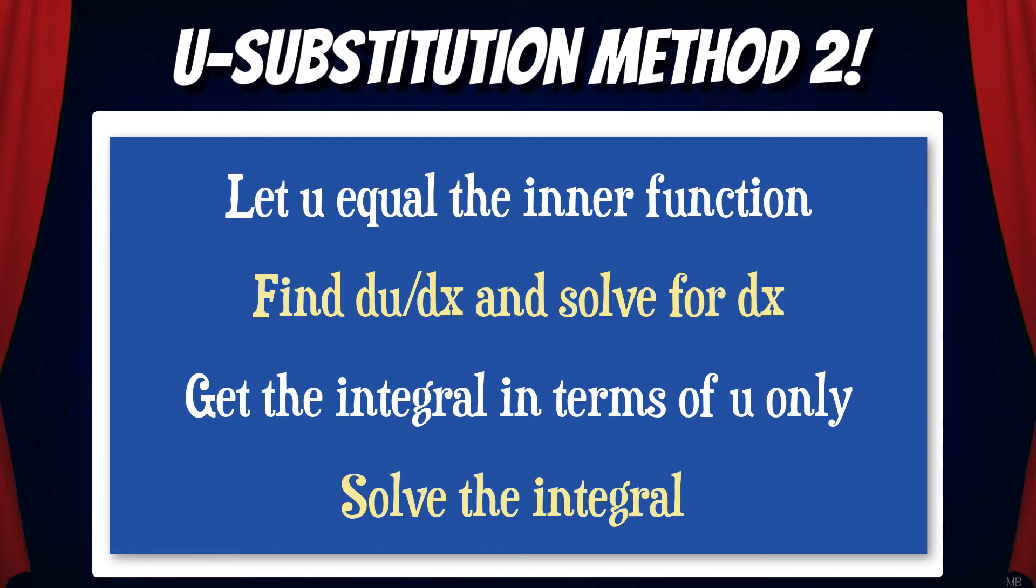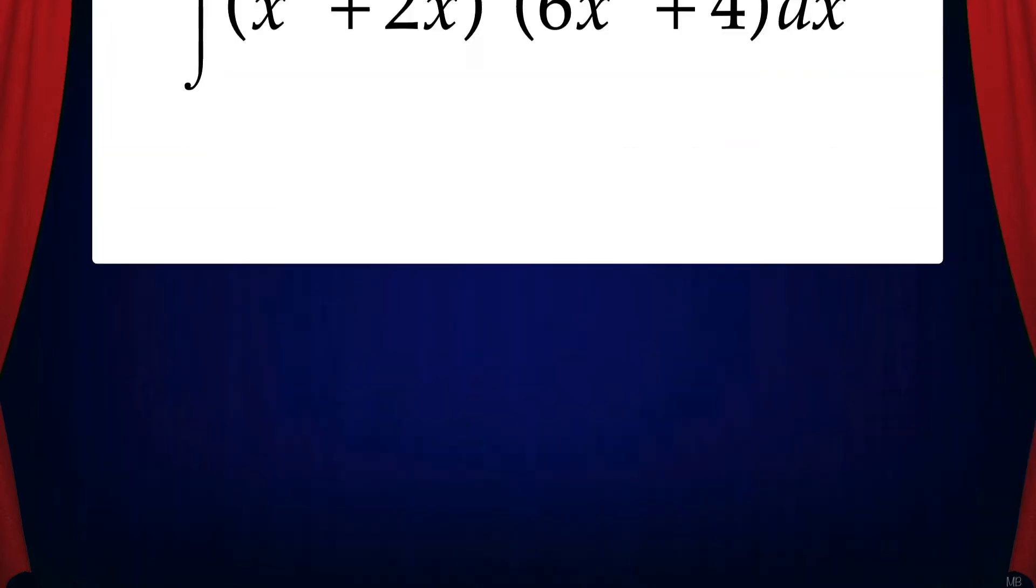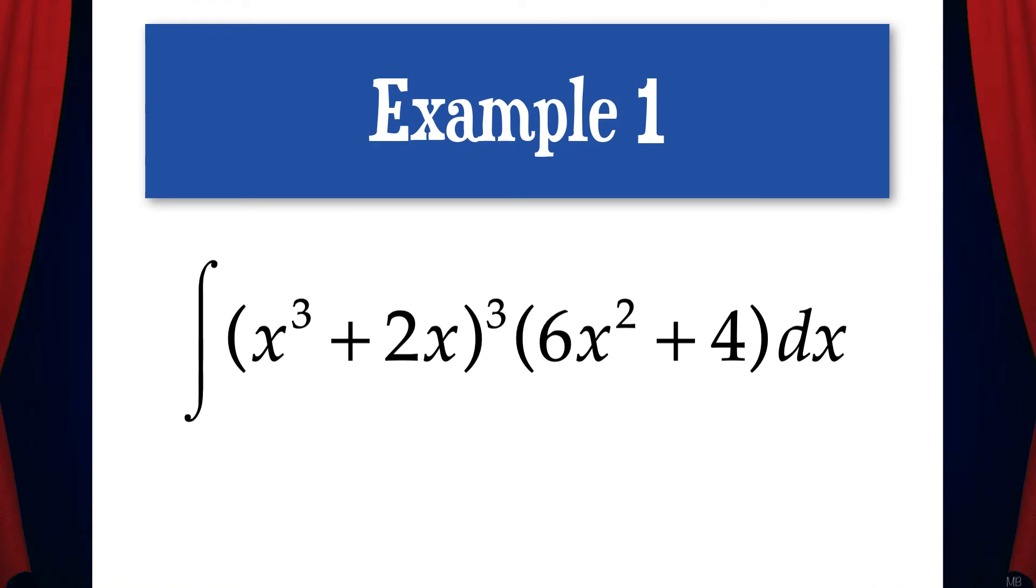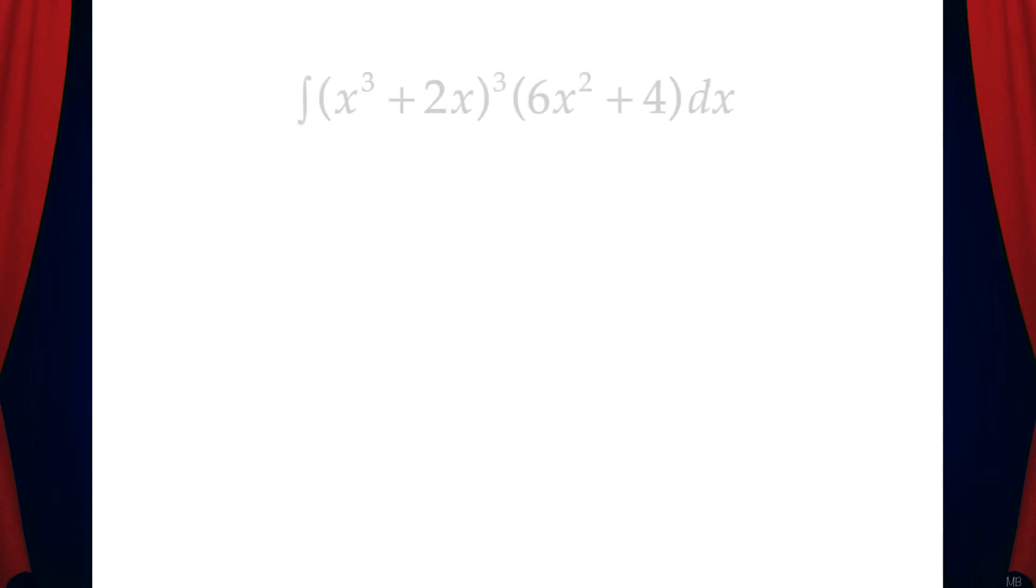Let's do some example problems to see how this works. Here's example one. We're going to solve this integral using this new u-substitution technique. So here we have the function the quantity of x cubed plus 2x to the third power times the quantity of 6x squared plus 4. We can see that x cubed plus 2x is an inner function. So let's let u equal x cubed plus 2x.